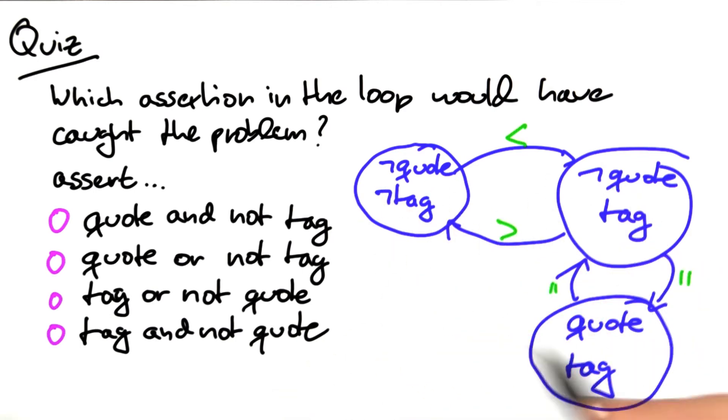These are the three states that our program can be in. Which state is missing? The state that is missing is a state in which we would have quotes, but we are outside of tags.